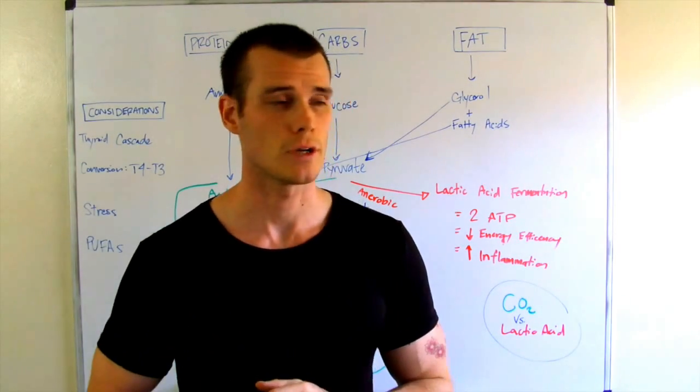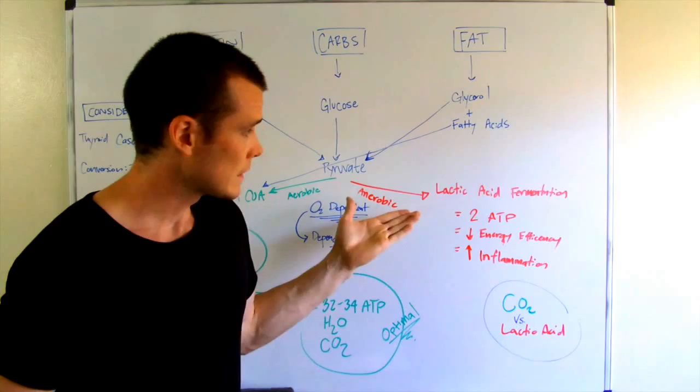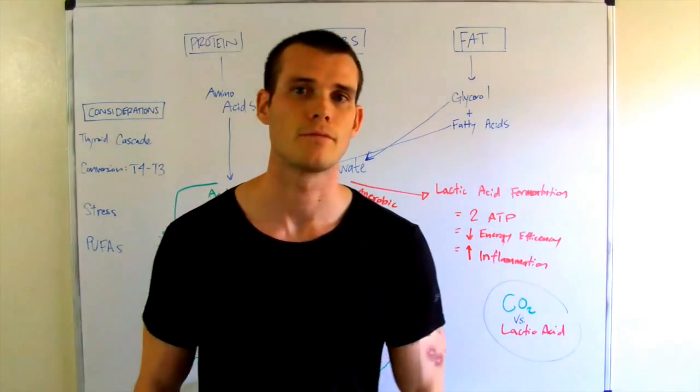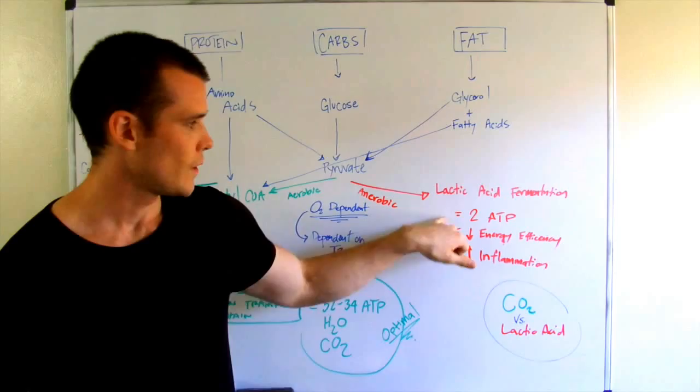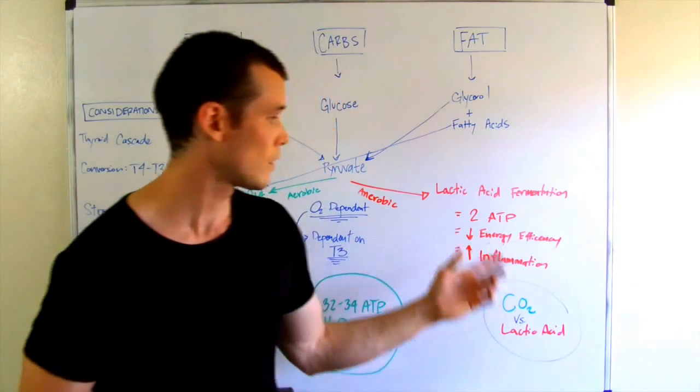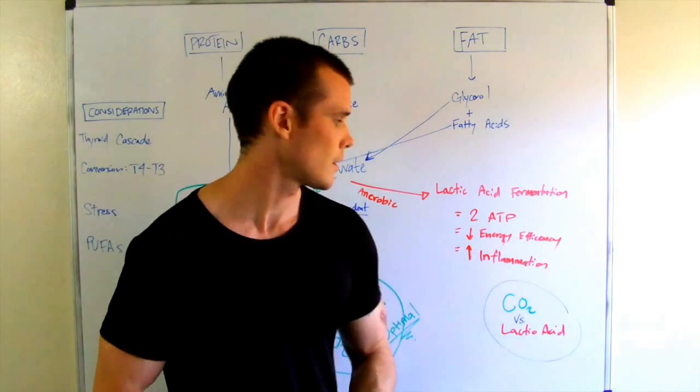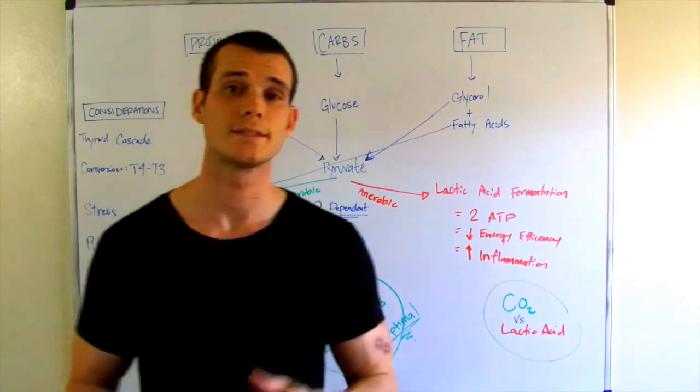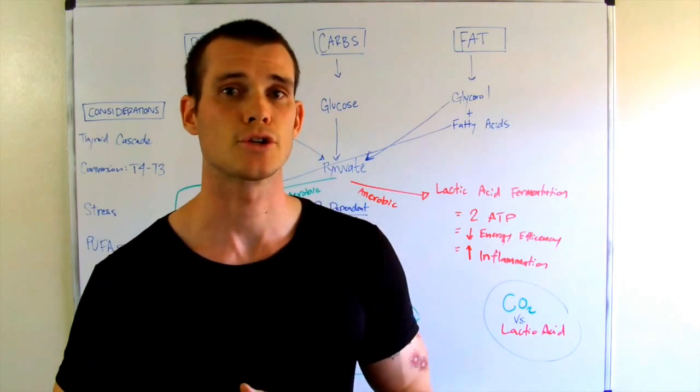So in the absence of oxygen, what we have is an anaerobic pathway that leads us to this lactic acid fermentation pathway. You can see that we have about two units of ATP or units of energy. So the energy efficiency is not very good here. Now this whole pathway is necessary in certain circumstances, especially during exercise like sprinting or certain types of weight lifting.